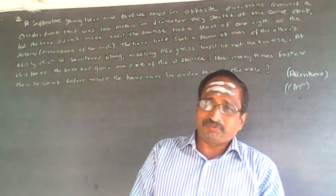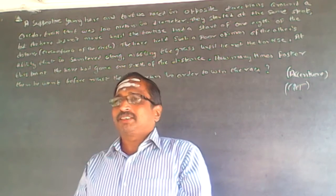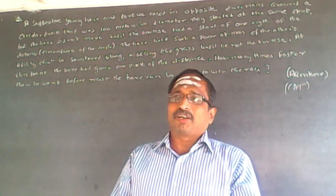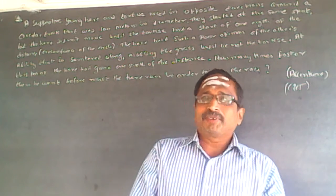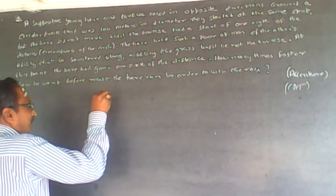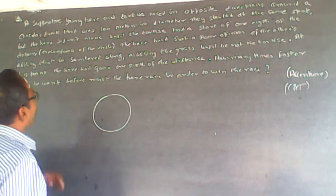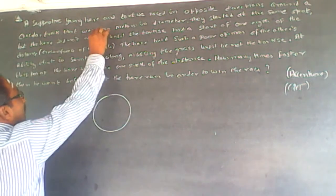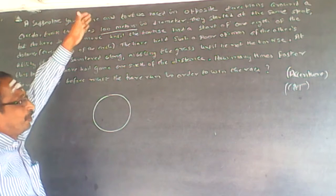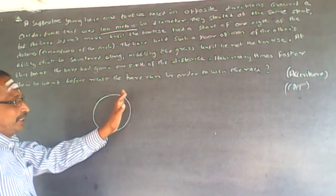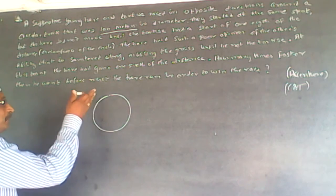I can also call it a chain rule problem and a relative velocity problem — all of these concepts apply here. But it is more of a reasoning problem. It is also a circular track problem. Don't bother about the 100 meters diameter — that data is irrelevant. You don't need to compute 2πr, because what we are going to use is ratios and proportions, and the circumference will cancel out since the question asks for the ratio of speeds.